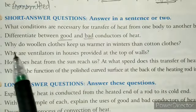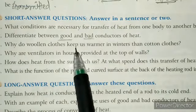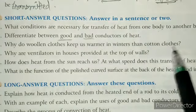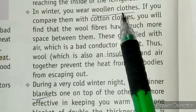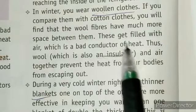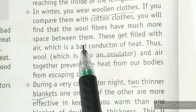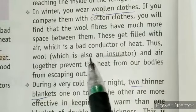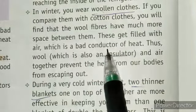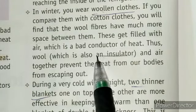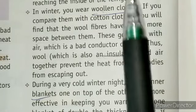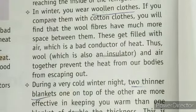The next question: why do woolen clothes keep us warmer in winters than cotton clothes? Woolen clothes act as insulators because they have air spaces between the fibers. These air spaces reduce conduction between two surfaces, making woolen clothes bad conductors of heat. Hence we wear woolen clothes in the winter season.